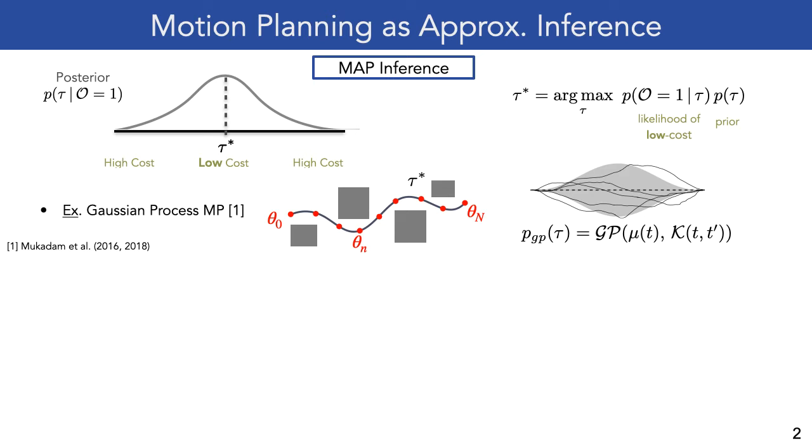One prominent example of this paradigm is Gaussian process motion planning, or GPMP. A prior over trajectories is defined as a Gaussian process, which encodes smooth system dynamics. Continuous trajectories are parameterized by a discrete set of support states, denoted by theta.